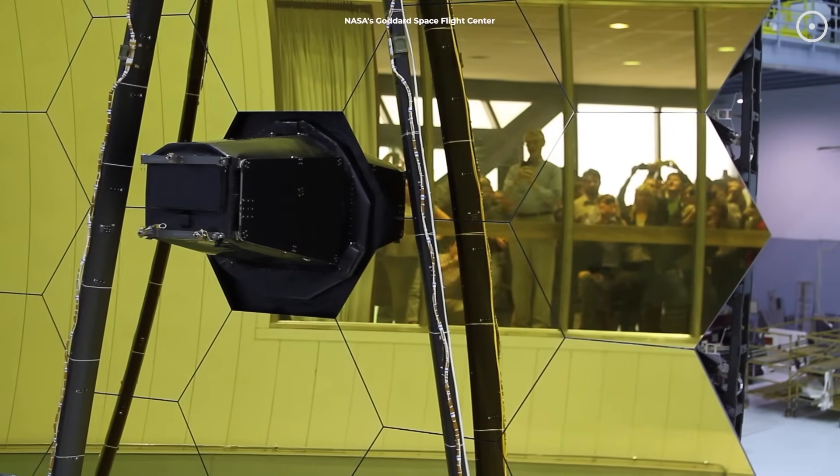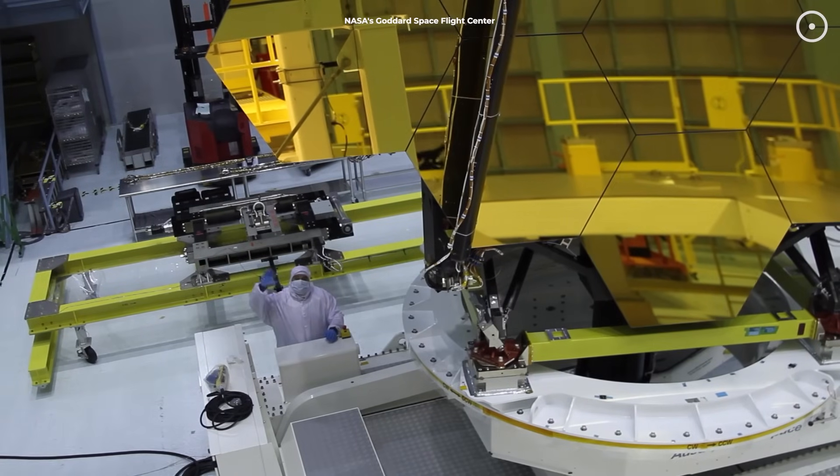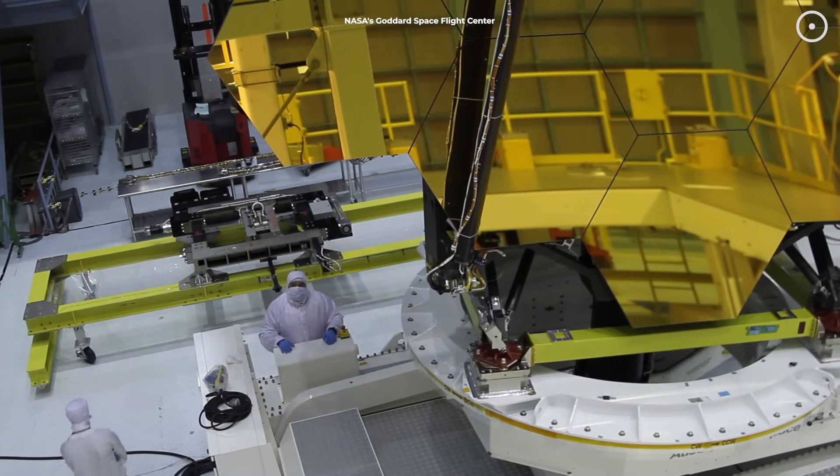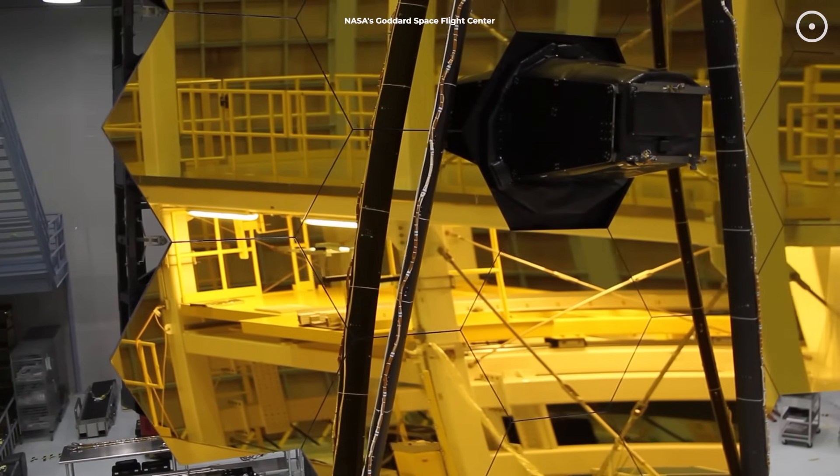Its massive 6.5 meter mirror is coated in gold for a very specific reason. To capture light that our human eyes can't even see. And that's exactly what makes it perfect for spying on baby stars.